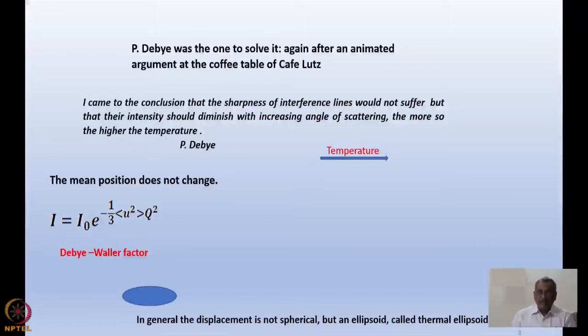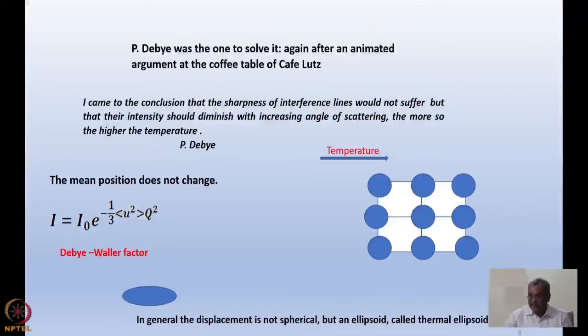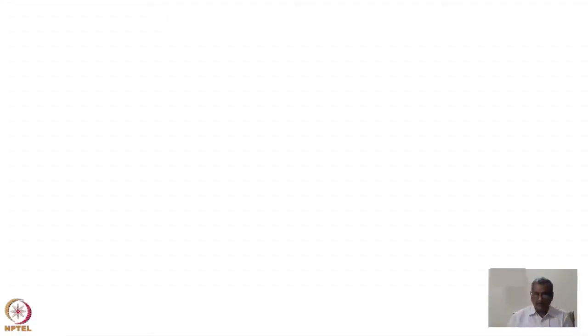He writes, I came to the conclusion that the sharpness of the interference lines would not suffer, but that their intensity should diminish with increasing angle of scattering, the more so the higher the temperature. If you see at lower temperature, you can see the atoms are located at the rigid lattice sites in a crystallographic structure, say 0 degree Kelvin.